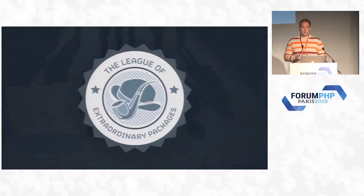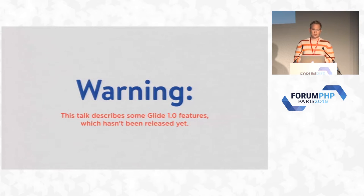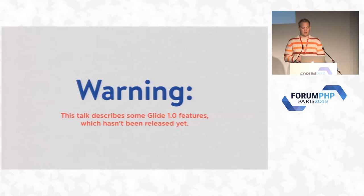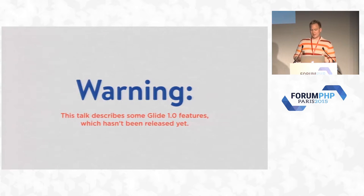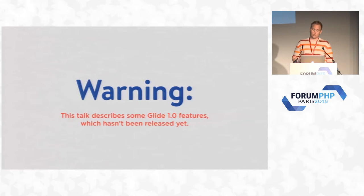Just one note about this talk before we go any further: a bunch of the stuff I'm going to be showing you is going to be features found in the next release of Glide, version 1.0. I'm currently at 0.3, but I want to give you a taste of what's coming. It's basically done — I'm just finalizing tests and patching the version. A bunch of people are already using it. I hope to have version 1.0 out before the year's out.